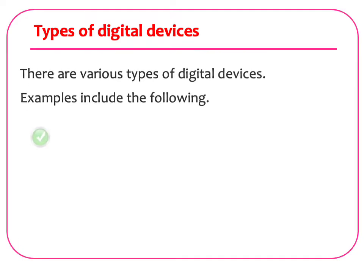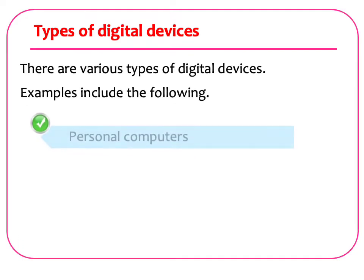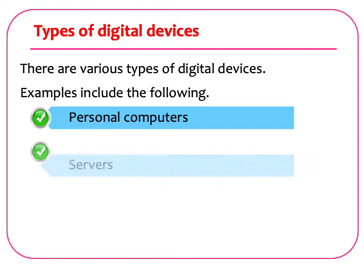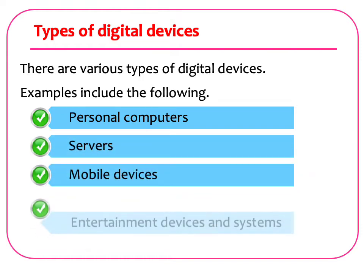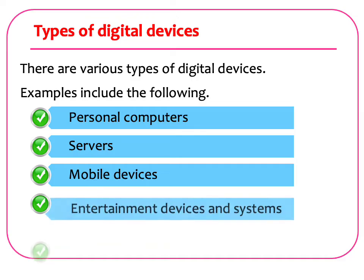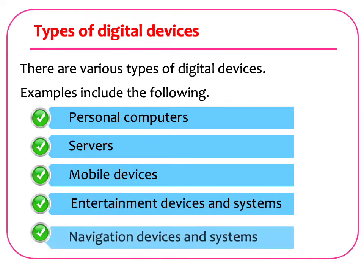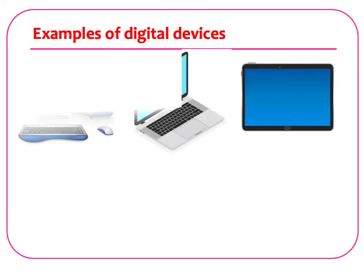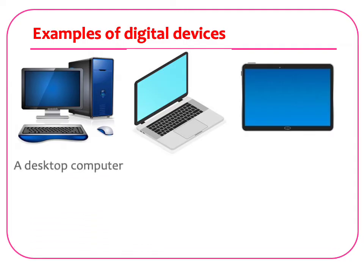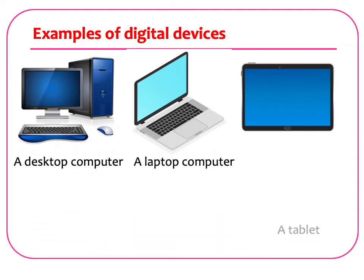There are various types of digital devices. Examples include personal computers, servers, mobile devices, entertainment devices and systems, and navigation devices and systems. Let us now identify examples of digital devices: a desktop computer, a laptop computer, and a tablet.